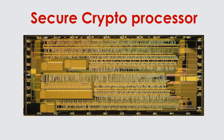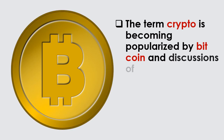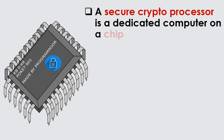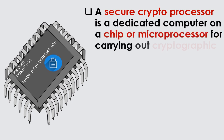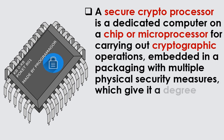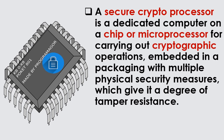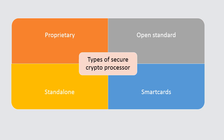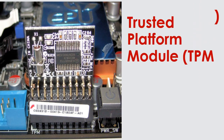Secure Crypto Processor. The term crypto is becoming popularized by Bitcoin and discussions of cryptocurrency. A secure crypto processor is a dedicated computer on a chip or microprocessor for carrying out cryptographic operations, embedded in a packaging with multiple physical security measures, which give it a degree of tamper resistance. Types of secure crypto processors are: proprietary, open standard, standalone, smart cards, and trusted platform module (TPM).